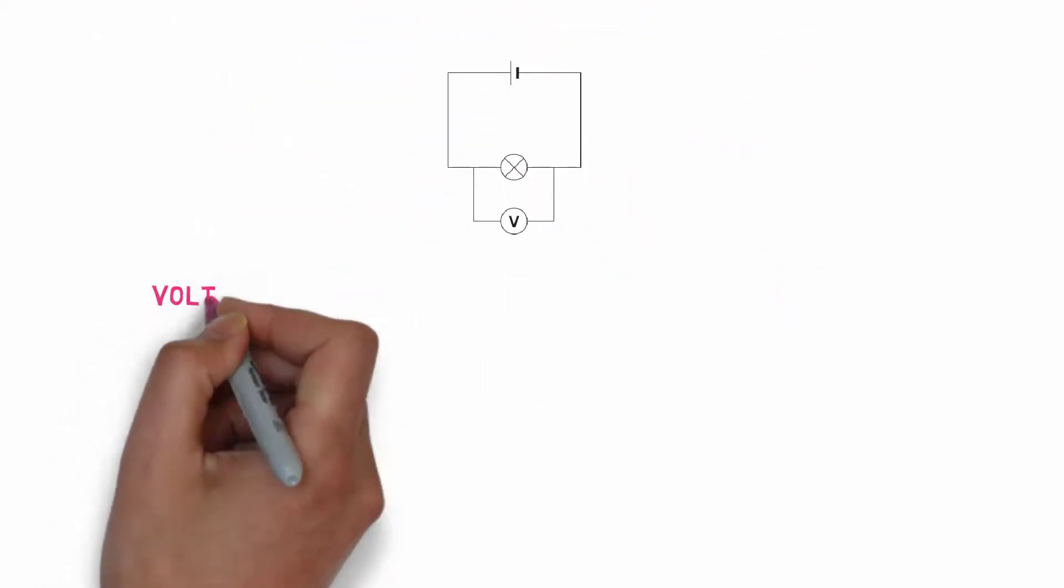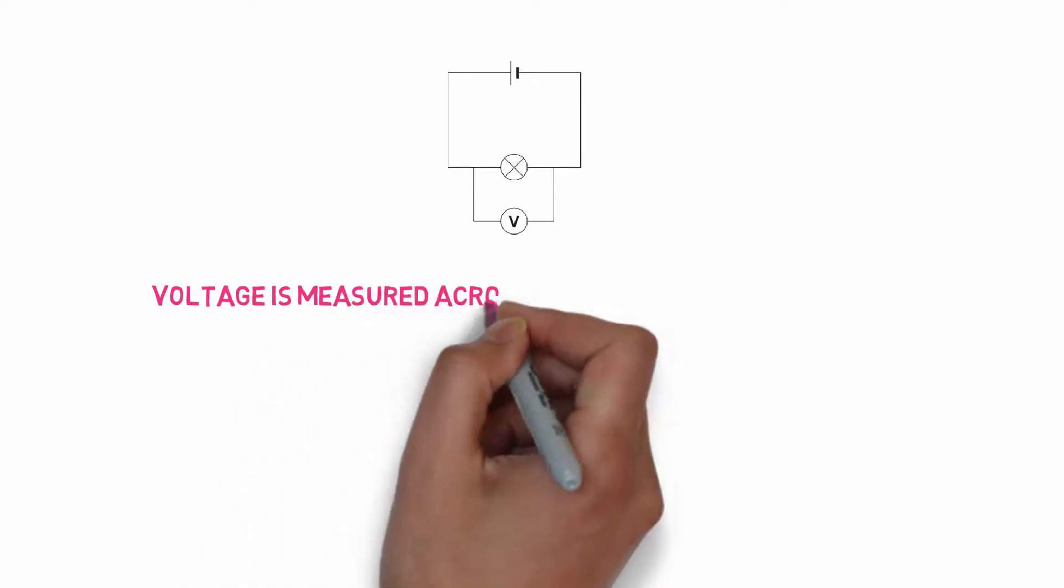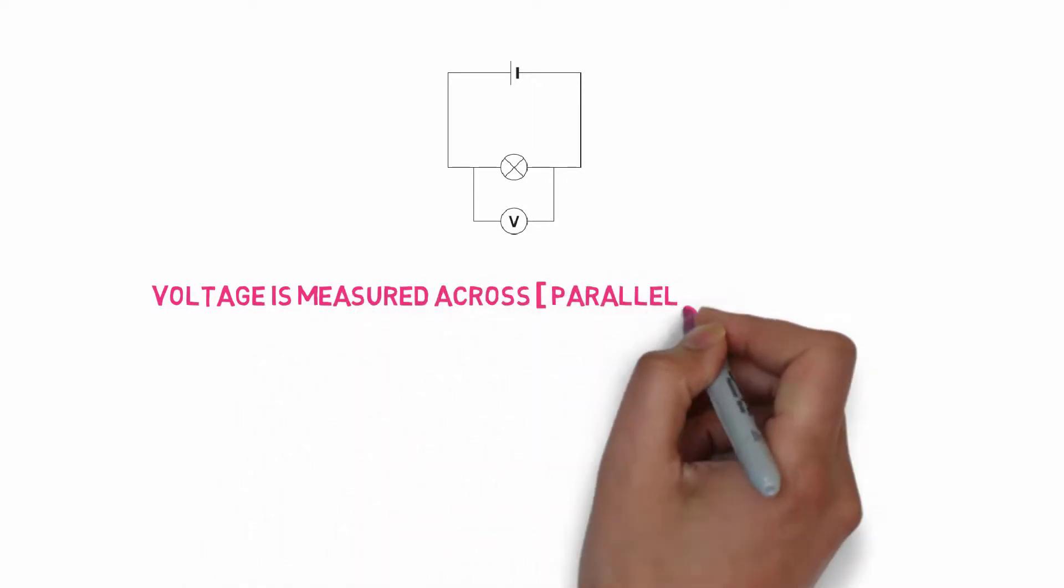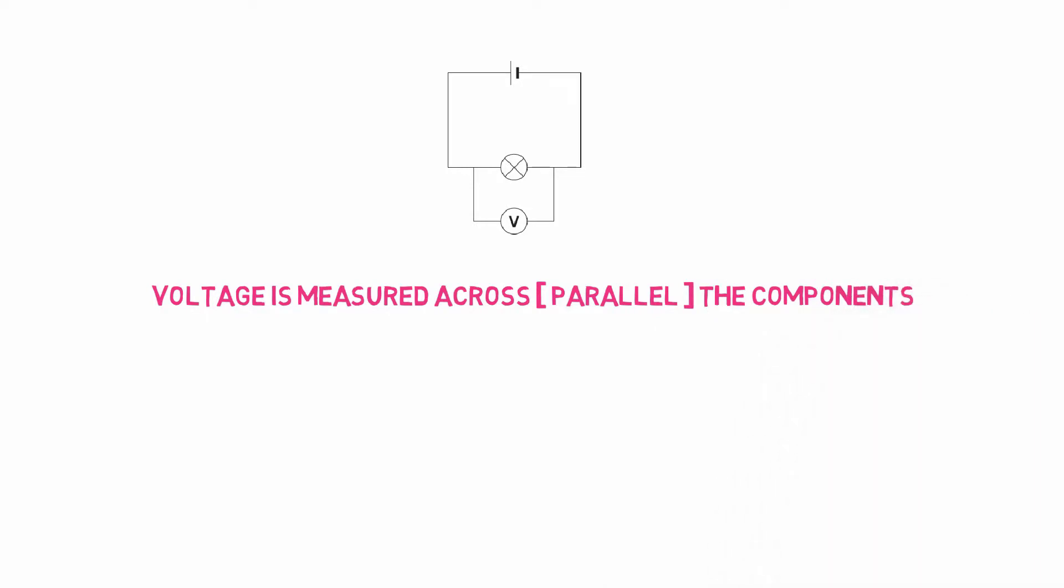Let us consider the circuit. If you want to measure the voltage in the circuit, you have to measure across the components, that means parallel to the component.